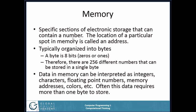What is memory? It is specific sections of electronic storage that can contain a number — ones and zeros, that's all it is. The location of a particular spot in memory is called the address. Memory is typically organized into bytes. We chunk bits together: a byte is eight bits, eight zeros or ones. That means any one byte can store 256 different numbers, since there are 256 different combinations you can make of eight positions each holding a zero or a one.